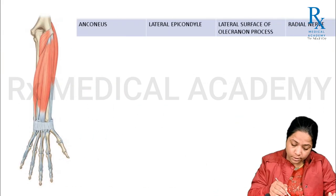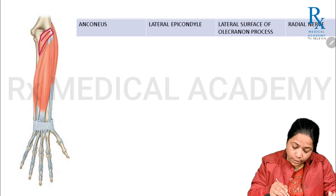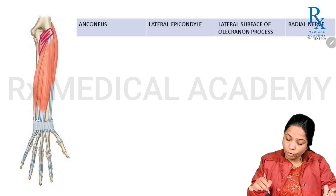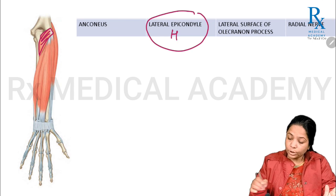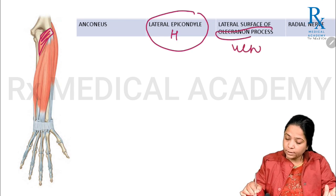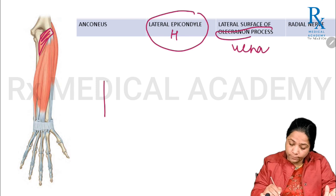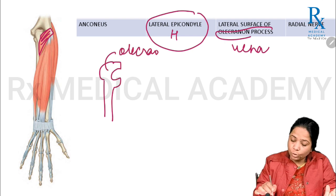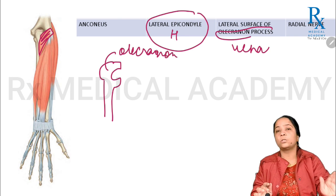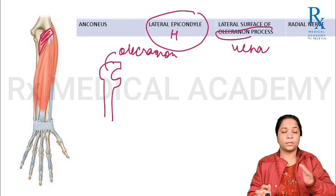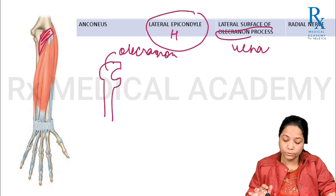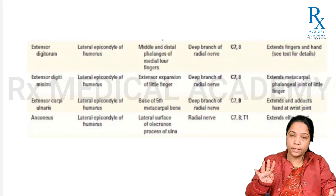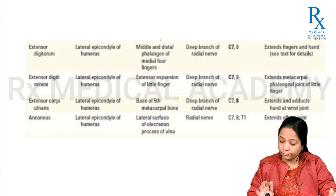Anconeus is a small muscle visible in this diagram. It arises from the common extensor origin at the lateral epicondyle of the humerus and inserts onto the lateral surface of the olecranon process of the ulna. The olecranon process is a projection at the upper part of the ulna, having superior, posterior, lateral, and medial surfaces. Anconeus inserts onto the lateral surface of this process and is supplied by the radial nerve.